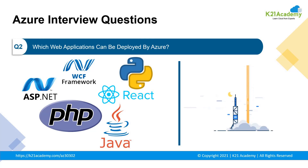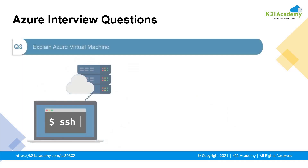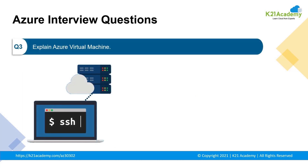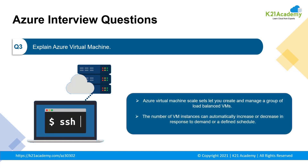Our third question is: explain virtual machines, and this question needs to be answered very well by you as it will test your basics to the core. A virtual machine is a virtual environment that functions as a virtual computer system with its own CPU, memory, network interface, and storage, created on a physical hardware system that could be located off or on premises.